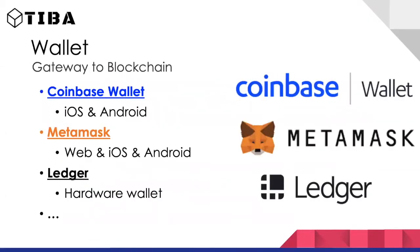For wallets — we mentioned wallets in the bitcoin lecture — a wallet allows you to access what you store on the blockchain. Some of the big ones are Coinbase Wallet, which has an iOS and Android app with multi-coin support and digital collectibles. MetaMask is popular on the web as a Chrome or Brave browser extension, and they recently released iOS and Android apps. There are also hardware wallets — like a USB stick — where you store your private and public keys, which many consider a more secure approach.